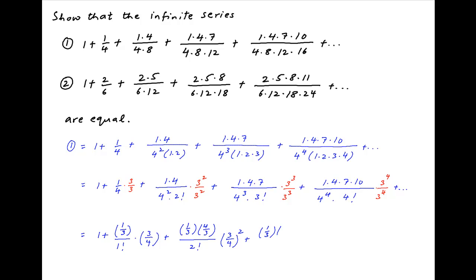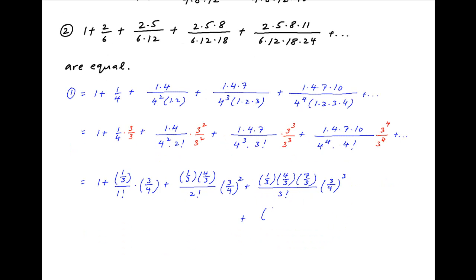...plus (1/3) times (4/3) divided by 2 factorial multiplied by (3/4) squared, plus (1/3) times (4/3) times (7/3) divided by 3 factorial multiplied by (3/4) cubed, plus (1/3) times (4/3) times (7/3) times (10/3) divided by 4 factorial multiplied by (3/4) to the power 4, plus and so on.